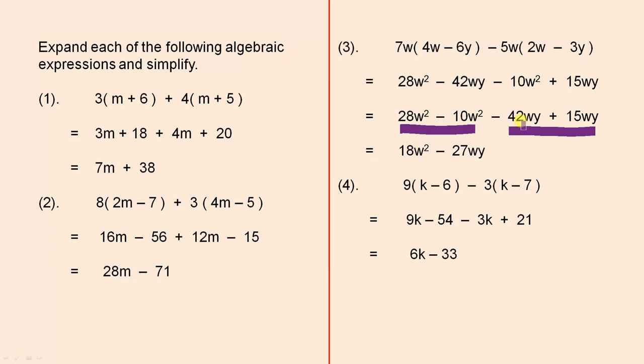And minus 42wy plus 15wy is minus 27wy. And the last example. 9 outside of k minus 6 minus 3 outside of k minus 7. That's 9k minus 54 minus 3k plus 21. 9k take away 3k gives you 6k, and minus 54 plus 21 gives you minus 33. So that's the answer.